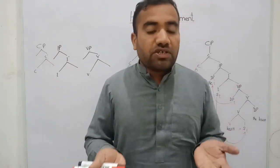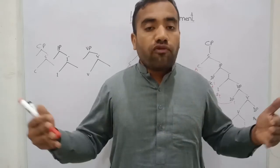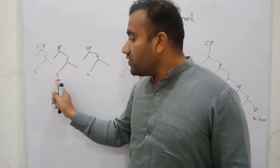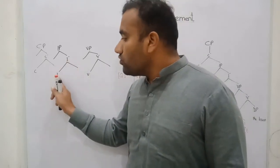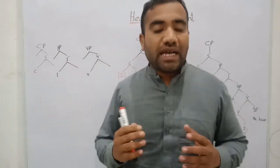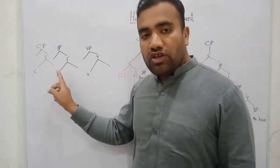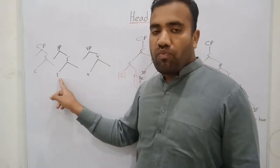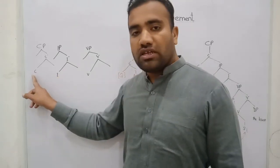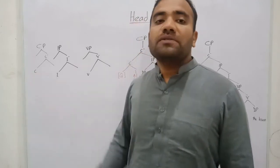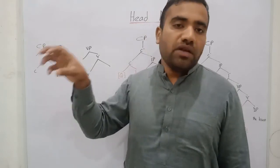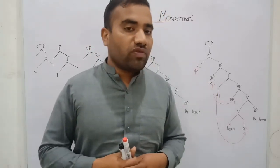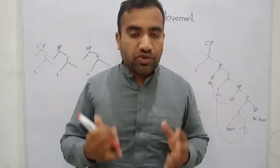These heads operate within the language, and in this way we can construct fully grammatical structures. If one head moves from its position to the position of another head, this is called head-to-head movement — because one head is moving from its position and taking the position of another head. We have two examples in this lecture: one is a simple declarative example and the second is an interrogative example.